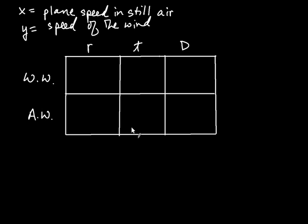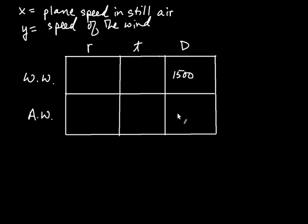I like to start off by filling in what I call the easy information — information given right away in the problem. The plane went 1,500 miles with the wind, so the distance with the wind is 1,500. The plane went the same distance against the wind, so that's also 1,500. The time with the wind was three hours.